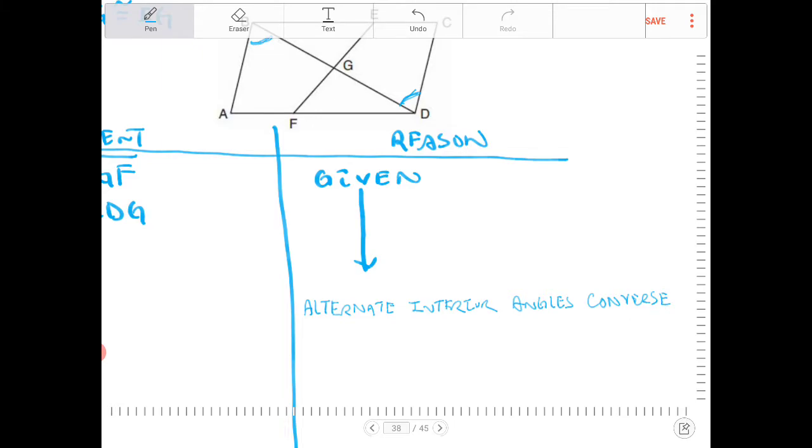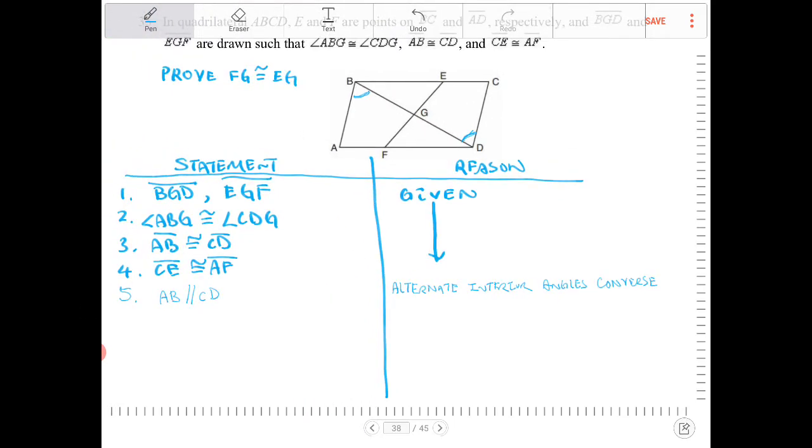Why do I need to put in the word converse? Well, that is because if we're given a pair of parallel lines, then we can say the angles formed between the parallel lines and the transversal, the alternate interior angles are going to be congruent. But here, in this case, we're proving the lines parallel. So it would be the reversal of that. So that's why we have to add in the word converse.